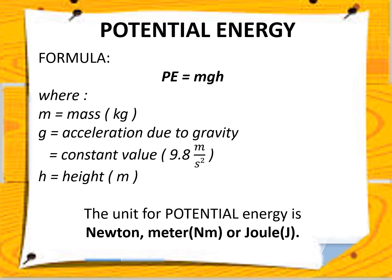There is also a formula to get potential energy. The formula is PE equals mgh. Here, m is the mass with unit kilograms. G is acceleration due to gravity — it is a constant value of 9.8 meters per second squared, so you will not be solving for it. H refers to height, with the unit in meters. Similar to kinetic energy, the unit for potential energy is also newton meters or joules.